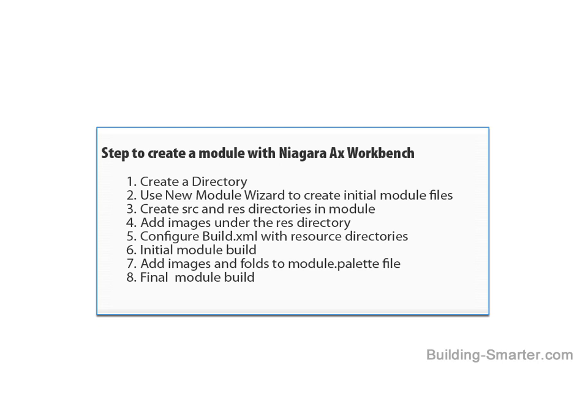Step 4, we're going to add our images under the res directory. Step 5, we're going to add our resource directories to the build file in the Workbench. Step 6, we're going to do an initial build of our module. Step 7, we're going to add the images and folders to our module.palette file. Step 8, we're going to do the final build of our module.